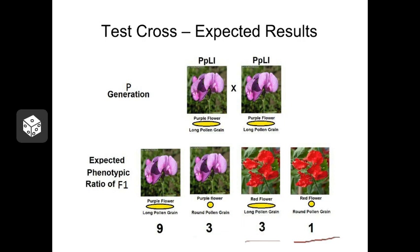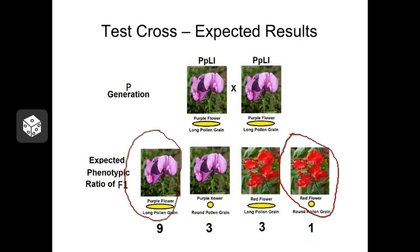Now according to Mendel's rules, this cross should produce a 9 to 3 to 3 to 1 phenotypic ratio among the F1's — 9 out of 16 purple with long pollen grains, 3 out of 16 purple with short pollen grains, 3 out of 16 red with long pollen grains, and 1 out of 16 red with short pollen grains. However, in nature, this cross mainly produces two phenotypes: purple with long pollen grains and red with short pollen grains. This occurs because these two traits are linked — located on the same chromosome, close together.